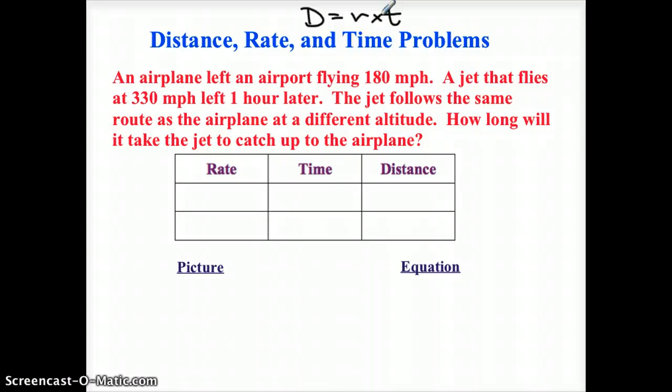So rate times time always equals distance. So let's look at this problem. An airplane left an airport flying 180 miles per hour. A jet that flies at 330 miles per hour left one hour later. The jet follows along the same route as the airplane at a different altitude. How long will it take the jet to catch up to the airplane?